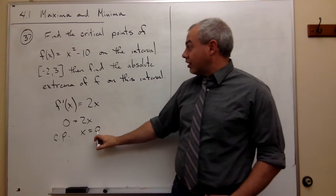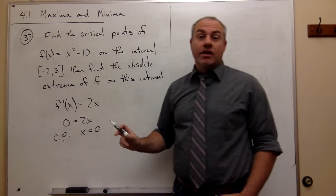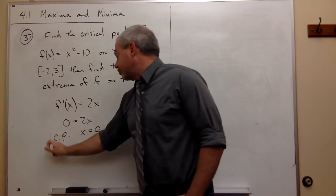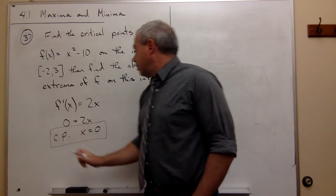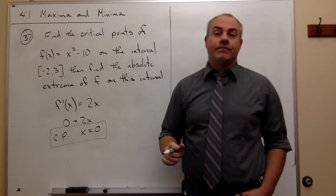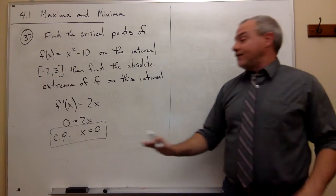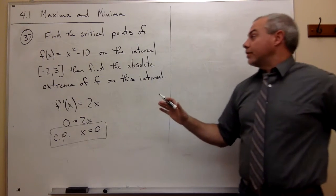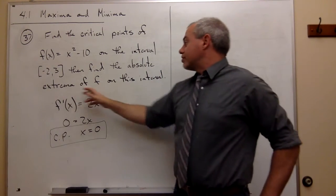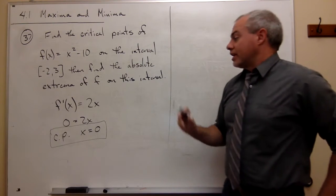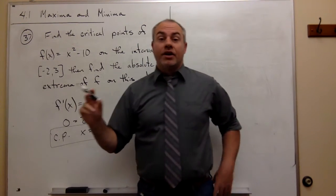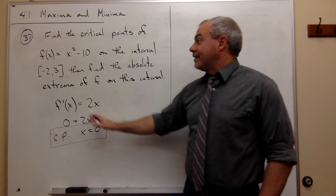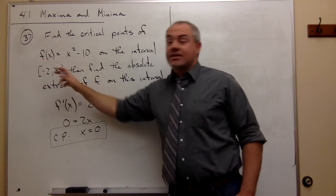I need to ask: is zero inside my interval? In this case, zero is inside the interval from negative two to three, so we do have an actual critical point of this function inside this interval. Now that I've found my critical point at x equals zero, I can answer the second part of the question. To find absolute extrema, there are two places where they can happen: at critical points, and at the endpoints of the interval.